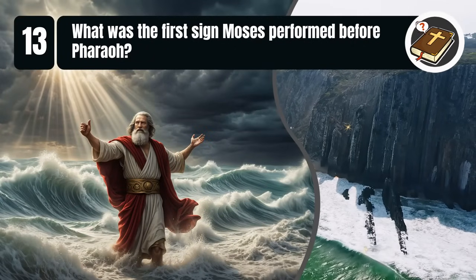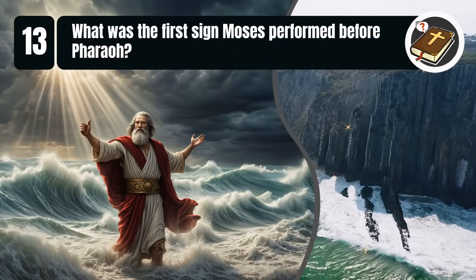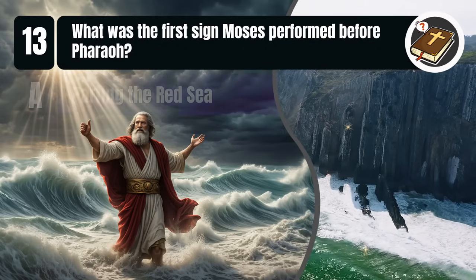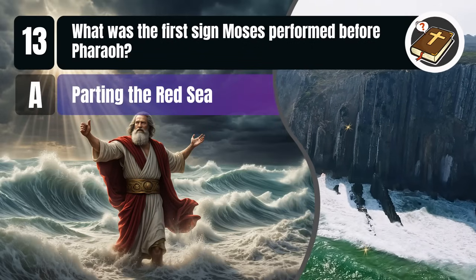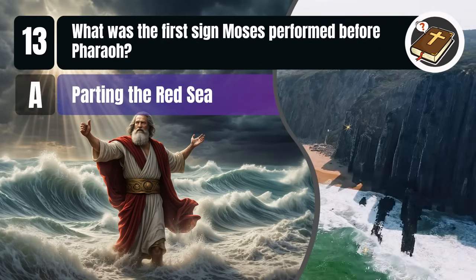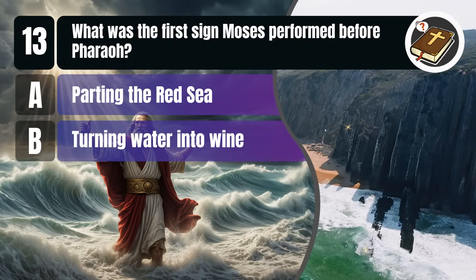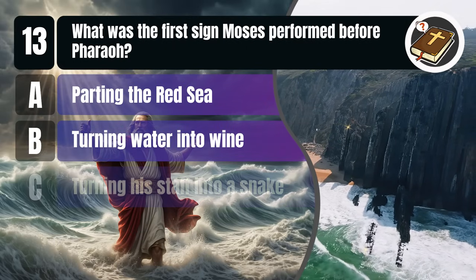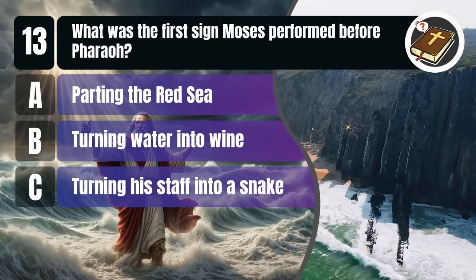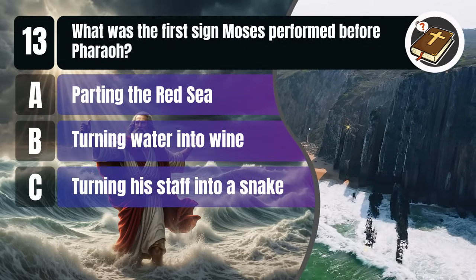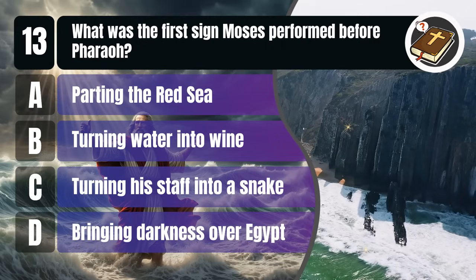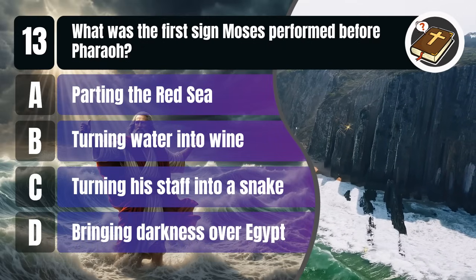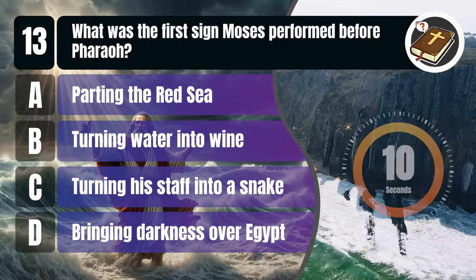Question 13. What was the first sign Moses performed before Pharaoh? A. Parting the Red Sea, B. Turning water into wine, C. Turning his staff into a snake, D. Bringing darkness over Egypt. You get 10 seconds.